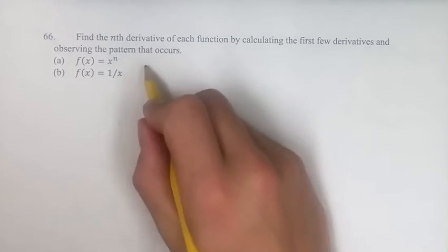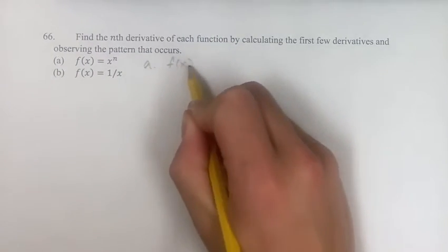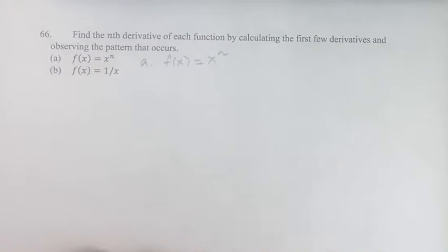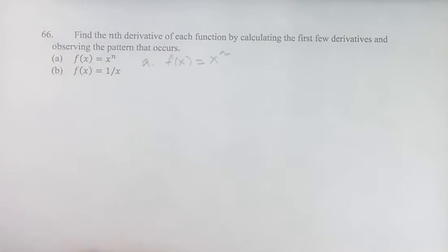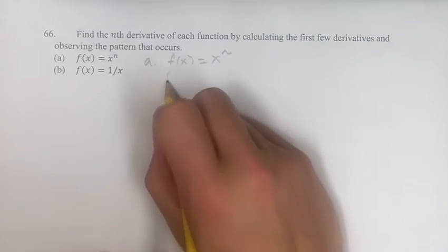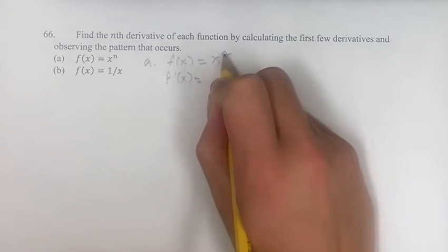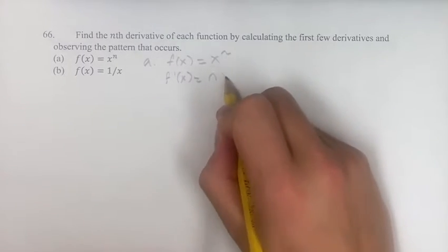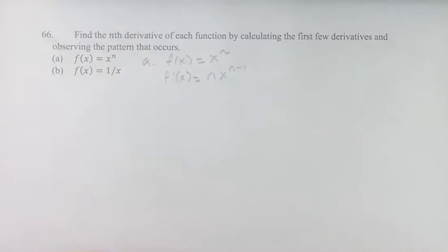For this first one, part a, we have f(x) = x to the n. We have a power function here, simple enough to find the derivative. You bring down the exponent and then your new exponent is the old one minus 1.